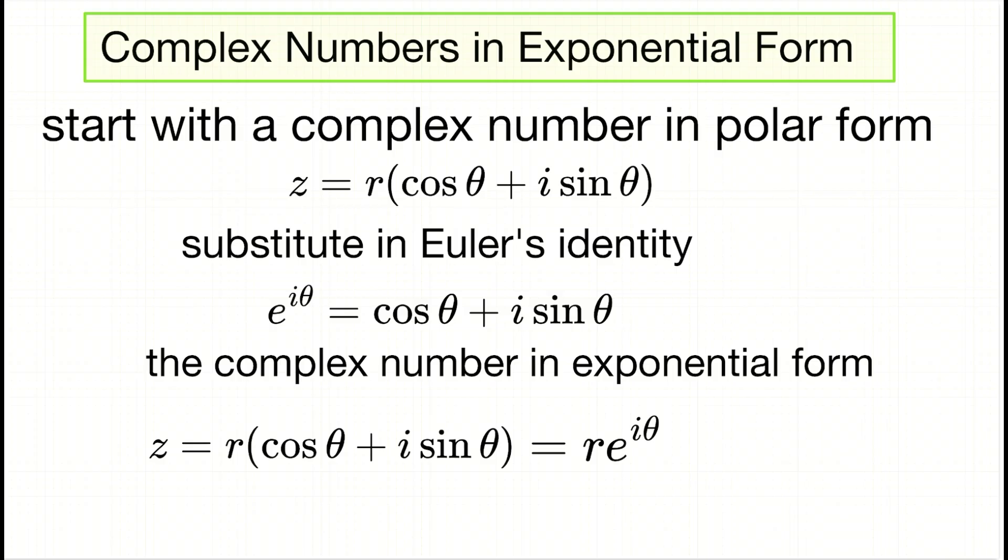First of all, let's start with a complex number written in polar form. That's going to be z equals r times the quantity cosine theta plus i sine theta. We can also write it as z equals r angle theta, where theta is the angle.